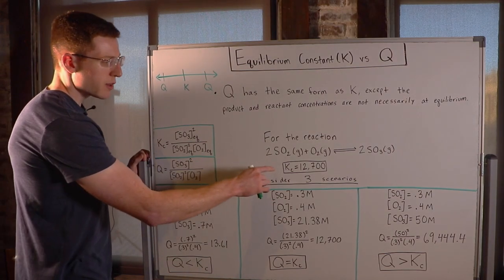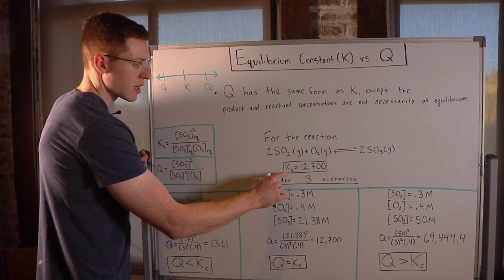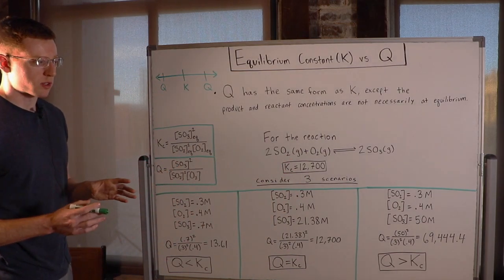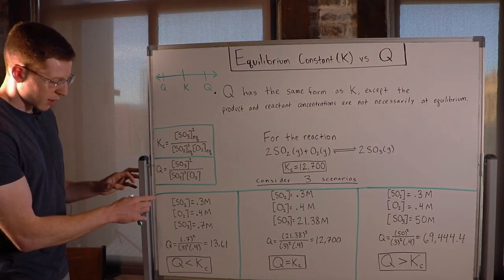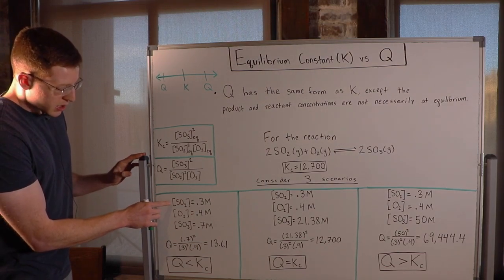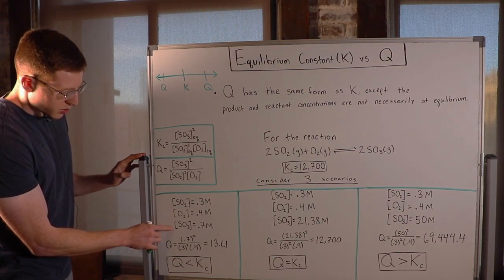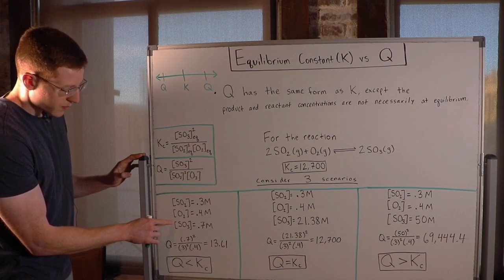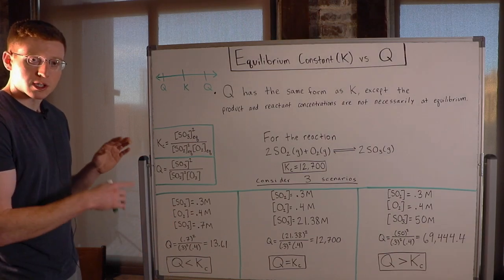So let's say we know the Kc for this reaction at a given temperature is going to be 12,700. I want to look at three scenarios that we could have for this reaction. In each scenario, I gave the initial concentrations of SO2, O2, and SO3, and then I calculated Q.